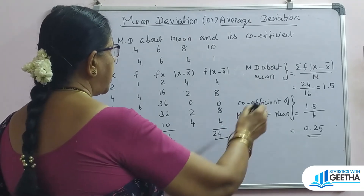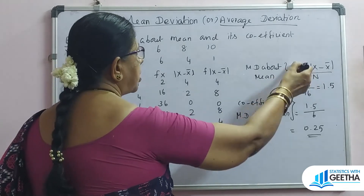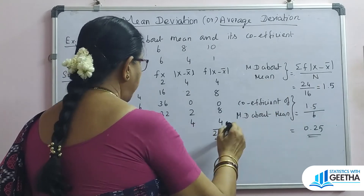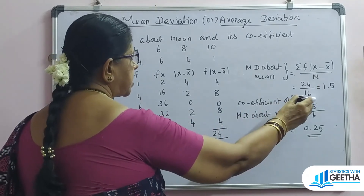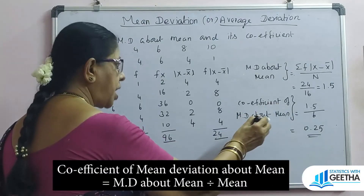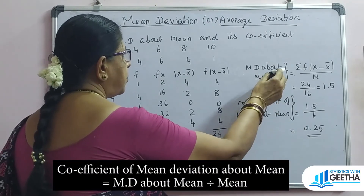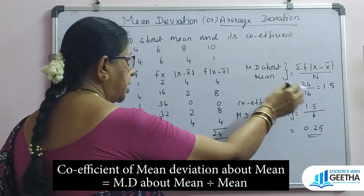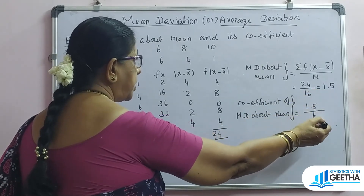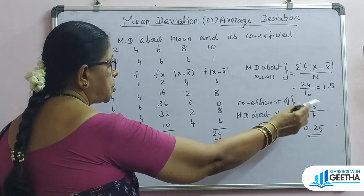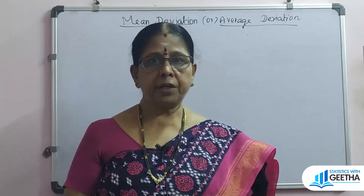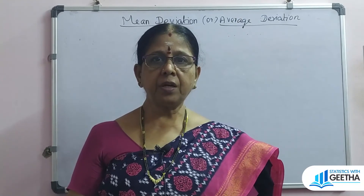Mean deviation about mean for discrete series equals summation of f×mod(x minus x-bar) divided by n: 24 divided by 16, which equals 1.5. The coefficient of mean deviation about mean equals mean deviation divided by mean: 1.5 divided by 6, which equals 0.25. In these two problems, we found one individual series example and one discrete series example.